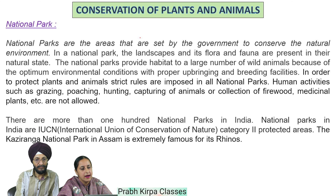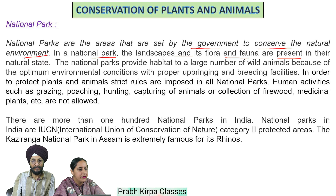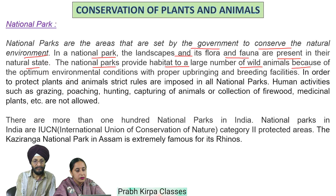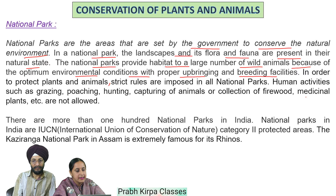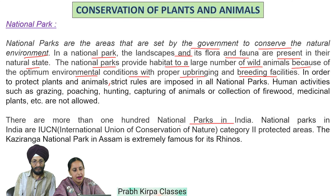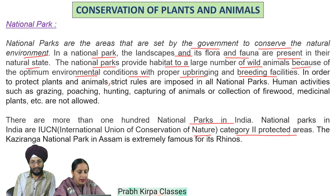National parks are areas set by the government to conserve the natural environment, where the landscapes and their flora and fauna are present in their natural state. National parks provide habitat to a large number of wild animals due to optimum environmental conditions with proper upbringing and breeding facilities. Strict rules are imposed — human activities such as grazing, poaching, hunting, capturing of animals or collection of firewood and medicinal plants are not allowed. There are more than 100 national parks in India. National parks are IUCN Category 2 protected areas. The Kaziranga National Park in Assam is extremely famous for its rhinos.